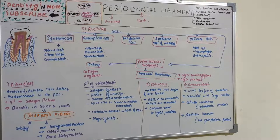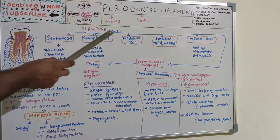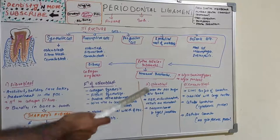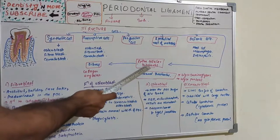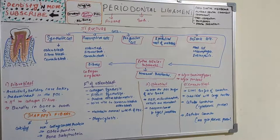Now we have the structure of periodontal ligament. We have basically two categories: one is cells and the next one is extracellular substance. Under cells we have basically five categories.